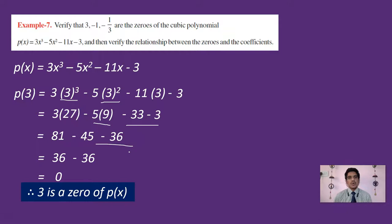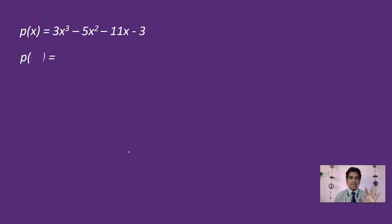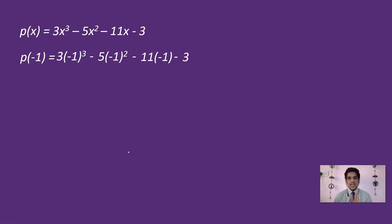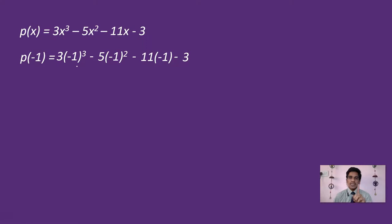Similarly, let us take the second zero, which is -1. We have to find P(-1). Substituting x = -1: 3x³ becomes 3 of (-1)³, minus 5x² becomes -5 of (-1)², minus 11x becomes -11 of (-1), and the constant is -3. Now, (-1)³ = -1×-1×-1 = -1, and (-1)² = 1.